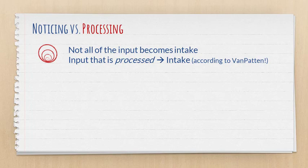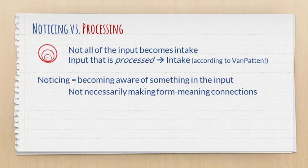Input that is processed is what can become intake. So Van Patten reminds everybody that noticing as proposed by Schmidt only involves becoming aware of something in the input. Schmidt said nothing about making form meaning connections. So a learner might notice something, they might go hmm, I've never noticed that before, but they may not be making any form meaning connections. They're not actually linking that form that they just noticed with any meaning in particular.